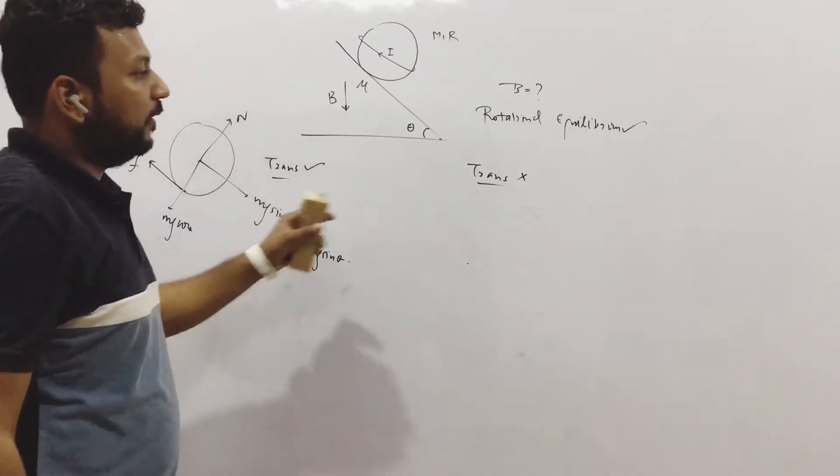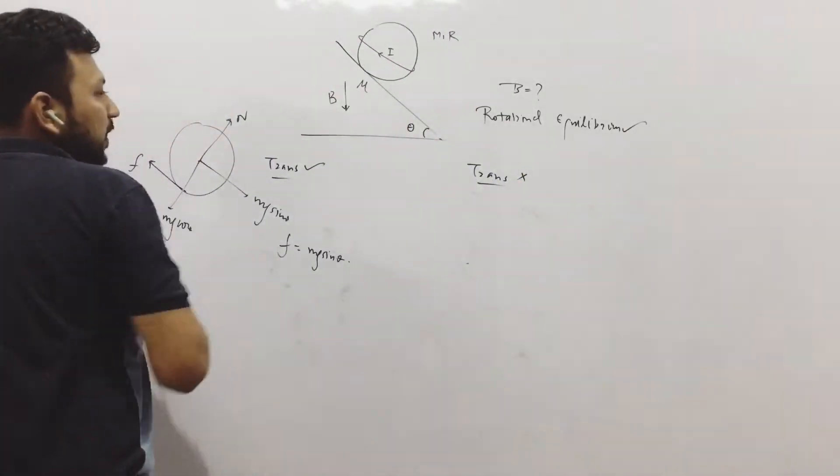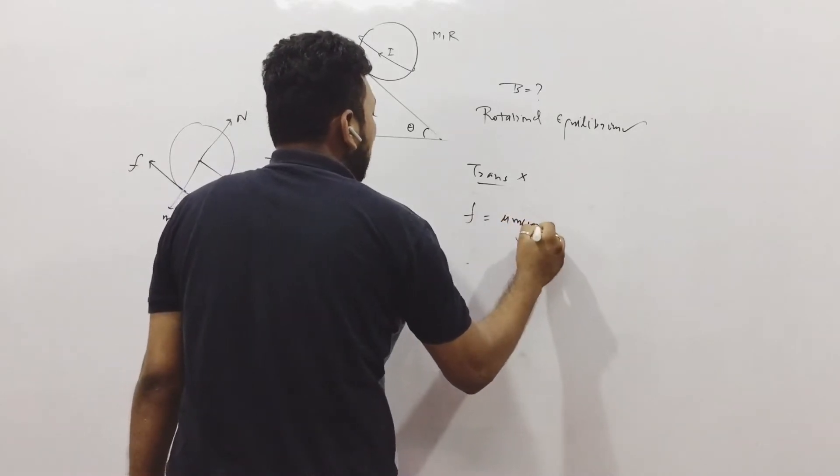If it was moving, if it is not in translational equilibrium, if it is moving that means friction is maximum. So in this case friction is maximum, mu Mg cos theta.